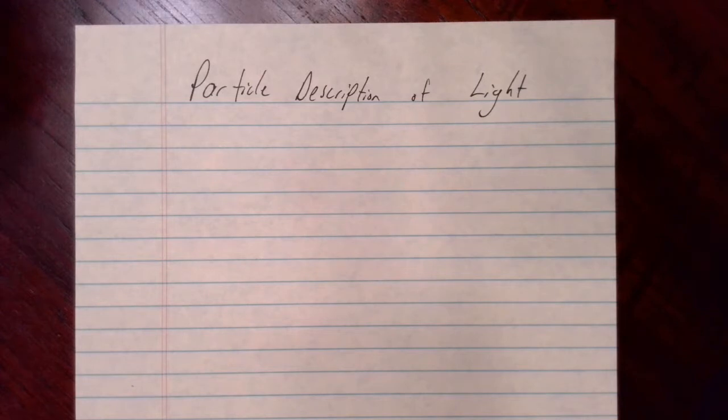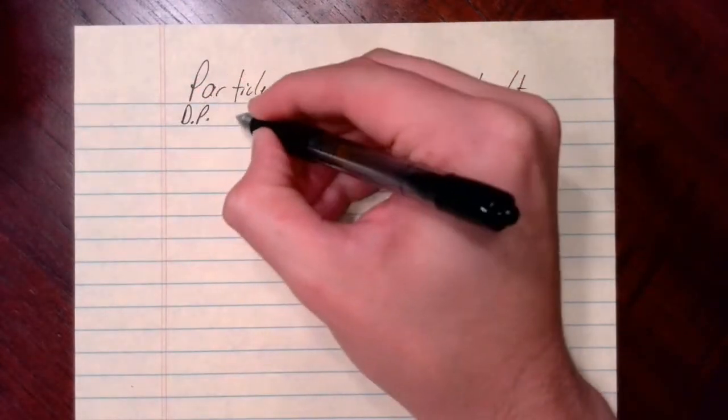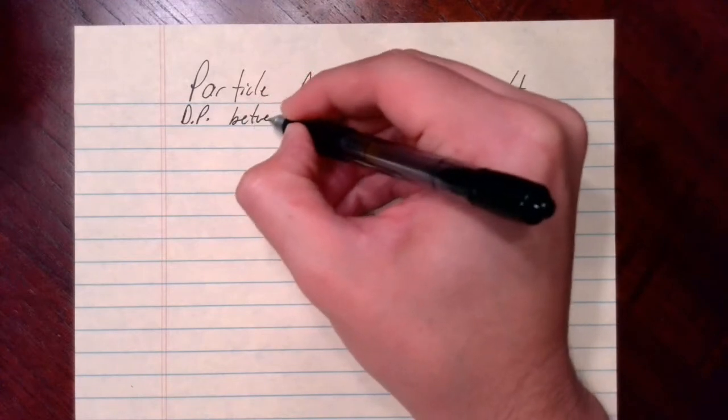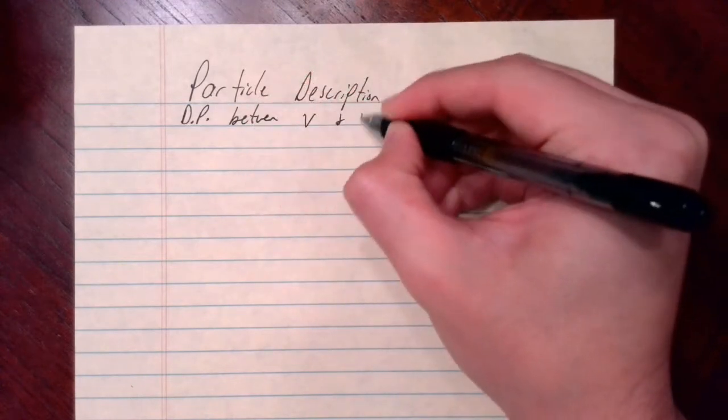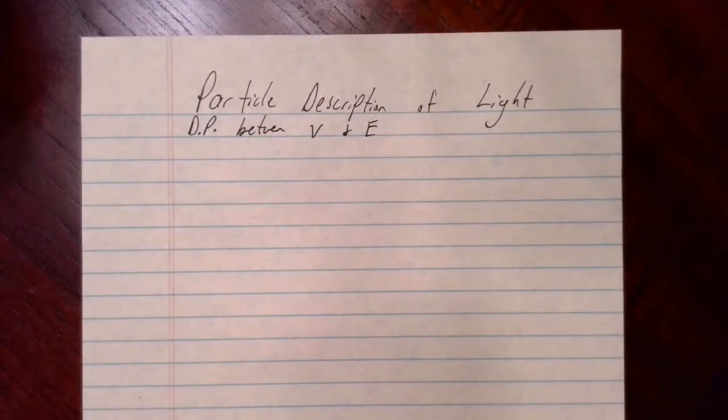Each frequency has a set color and that corresponds to a set amount of energy. We know that there is a direct proportion between frequency and energy. So when frequency goes up, energy goes up. And there's an inverse proportion between wavelength and energy. When wavelength increases, energy decreases.